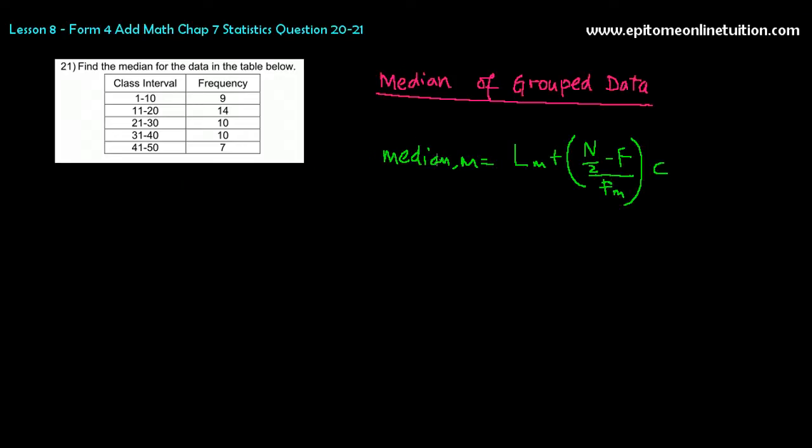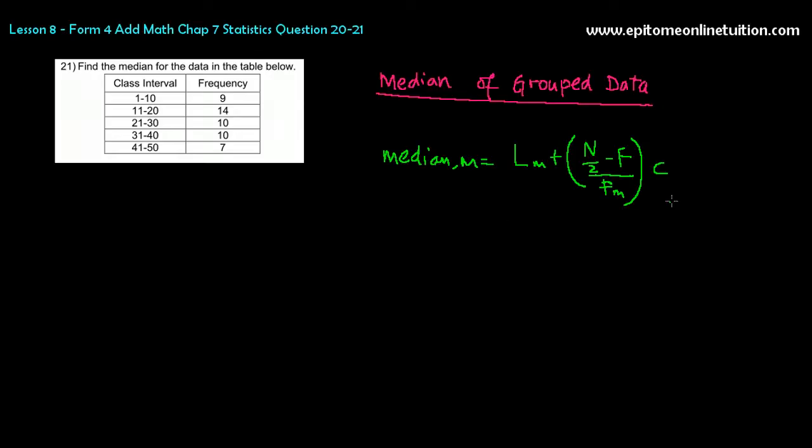So now, this formula is given, so you don't have to worry. But the problem is this: students tend to forget what does L stand for and what is big F and small F and the C. So they're always confused between these, so that's what you have to remember.